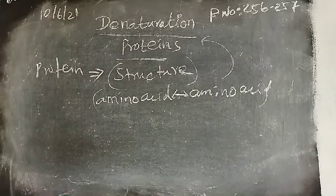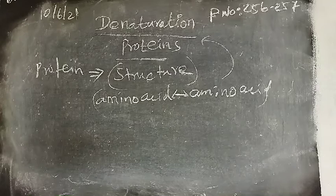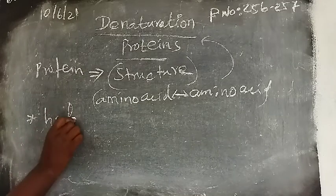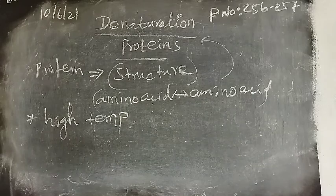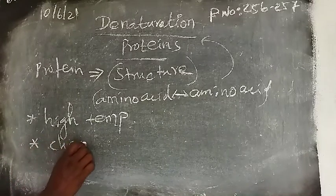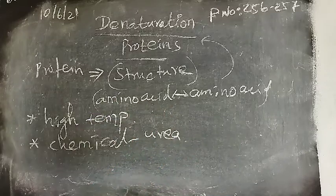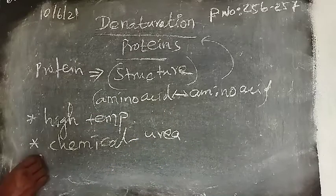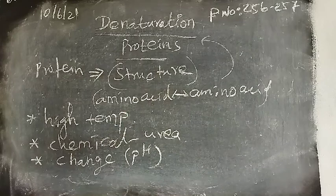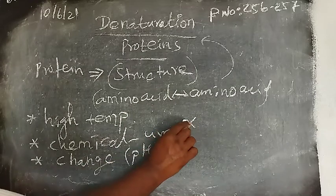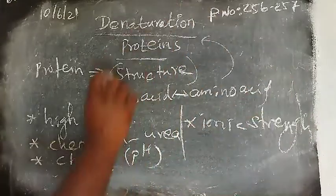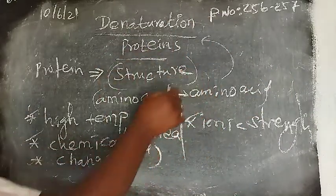Now, proteins are affected with certain factors like high temperature, reaction with certain chemicals. What are the chemicals? It may be urea. Or, change in pH, alteration of pH. pH of the solution if you change. One more, ionic strength. All these factors may affect the natural structure of protein.